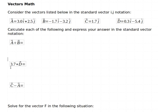Now we're going to move to the next problem, the 3.7 times d vector. So our d vector is 0.3 i-hat minus 5.4 j-hat. And we're going to multiply that entire vector by the number 3.7.